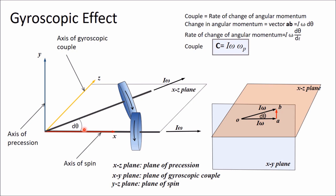The couple applied to move the axis of spin in a plane is called the active gyroscopic couple. When this axis is itself moving with some angular velocity, a reactive couple acts due to inertia. Its direction is just opposite to the active gyroscopic couple, and its magnitude is the same: Iωωp.